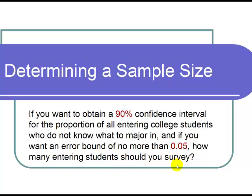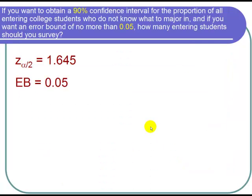So let's start out with our cast of characters. We have that z sub alpha over 2, which is the z that corresponds to a 90% confidence interval, is 1.645. And we have that our error bound should be no more than 0.05, so EB equals 0.05. And that's it for our cast of characters.